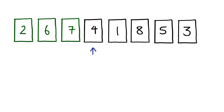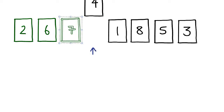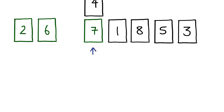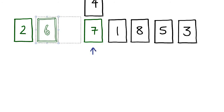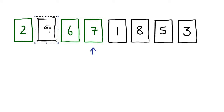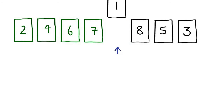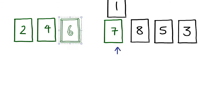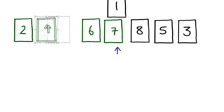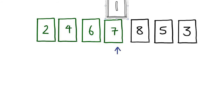We move on and now we encounter 2, 6, 7, 4. Since 4 isn't in its correct position, we're going to swap it backwards. Swapping 4 with 7 gives us 2, 6, 4, 7 — still not right — so we swap 4 and 6 as well, giving us 2, 4, 6, 7. Moving on, we're now pointing at 1. Following the pattern, we need to swap 1 all the way to the left of the list.